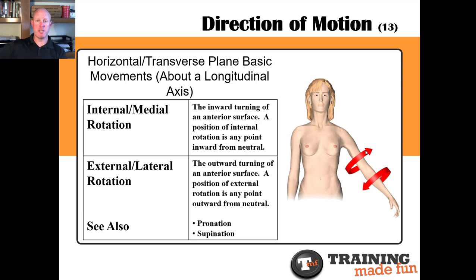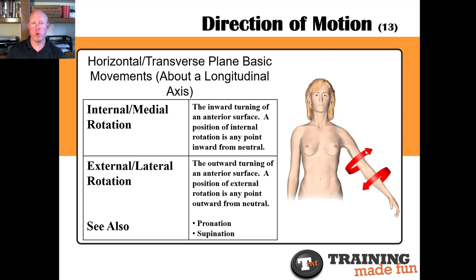Other motions in the horizontal plane include your shoulder: if you brought your arm across like a fly, that would be horizontal adduction across in front, and horizontal abduction out and away would be a reverse fly. Pronation and supination of the forearm — if this woman were to turn her forearm internally rotating it toward herself, thumb side turning in toward her body, that would be pronating her forearm. If she turned her forearm outward and away, that would be supination of the forearm.